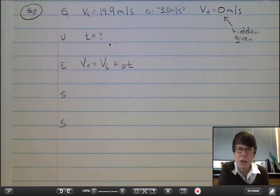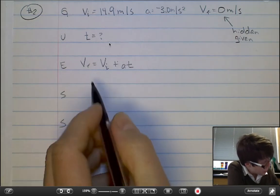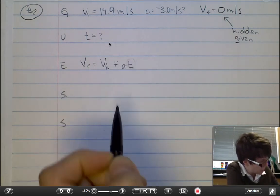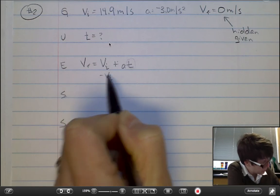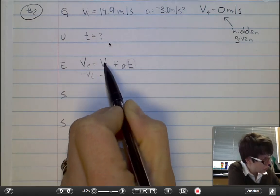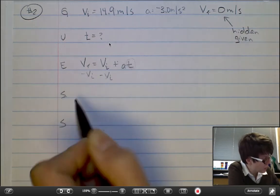I need to solve now for the unknown variable, the t. So to solve this equation for t, isolate the variable t. Subtract the Vi from both sides, then divide by a.